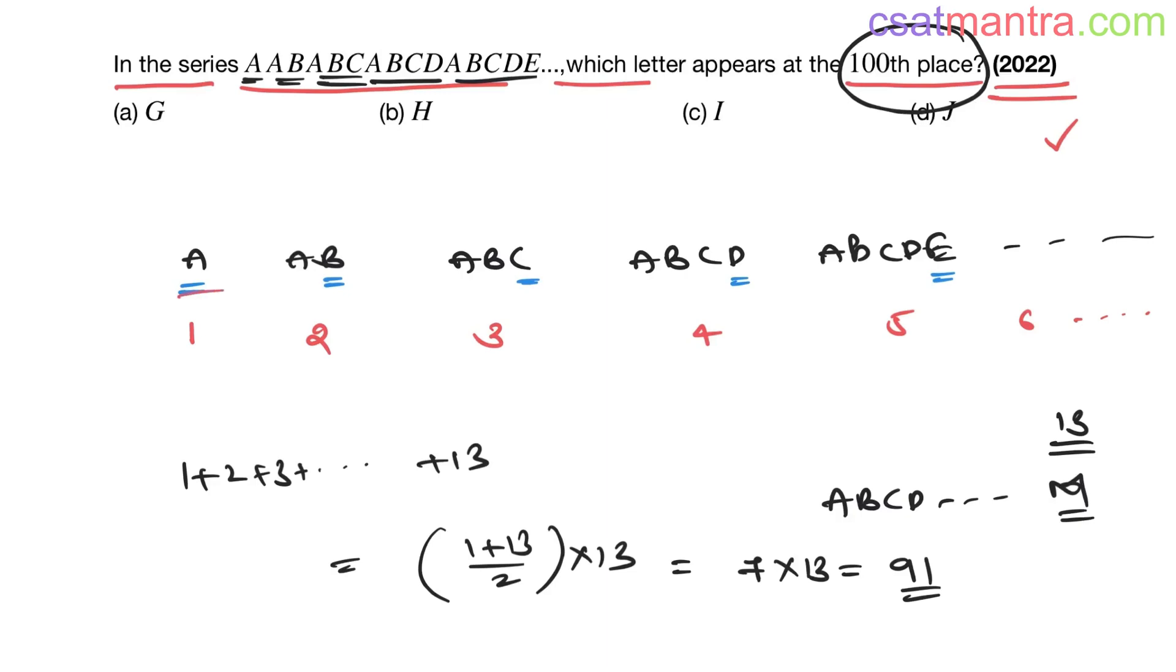So when you write like this: A, AB, ABC, ABCD... ABCDM, this M would be at ninety-first place, my friends. We need hundredth place, that means we need to have nine more letters.